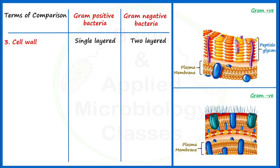Now looking at gram negative bacteria cell wall: the peptidoglycan layer is there as in gram positive bacteria, but outside this layer one additional layer is present, called the outer membrane. In this way, the cell wall in case of gram negative bacteria is called a two layered cell wall.